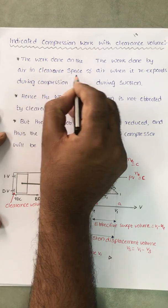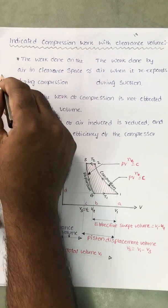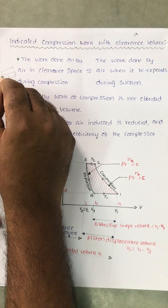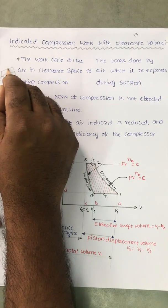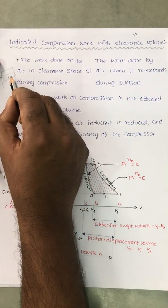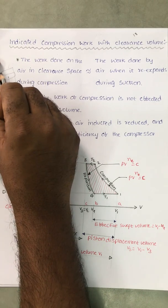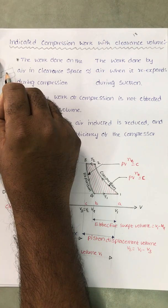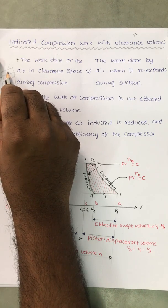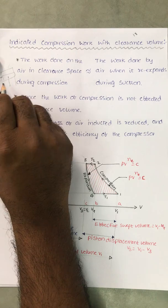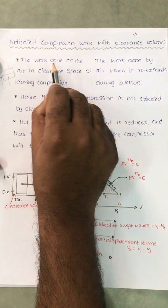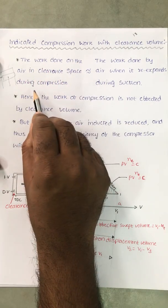The work done on the air in the clearance space during compression — consider the piston-cylinder arrangement. At the top dead center (TDC), when the piston reaches TDC, some amount of volume is present at the top of the piston; that is called clearance volume. So if we compress the air and deliver it, some amount of air remains inside the clearance volume, which affects the next suction stroke, because this air will expand first before fresh air can enter.